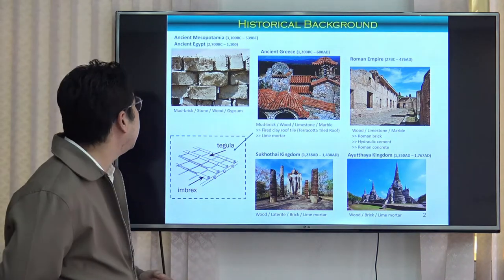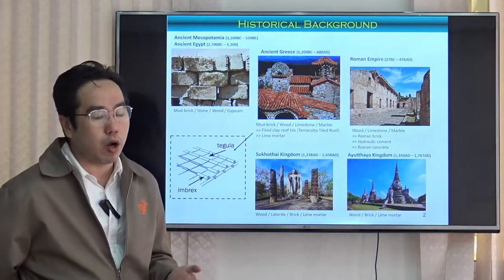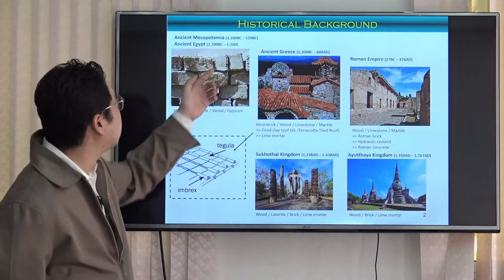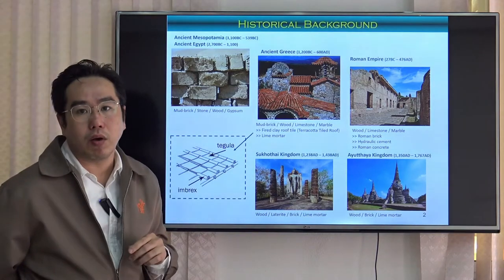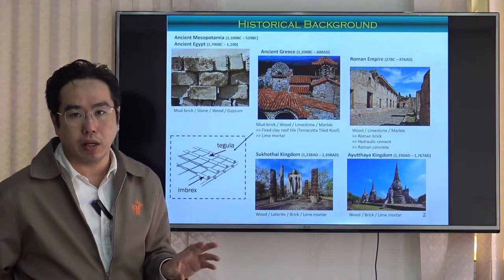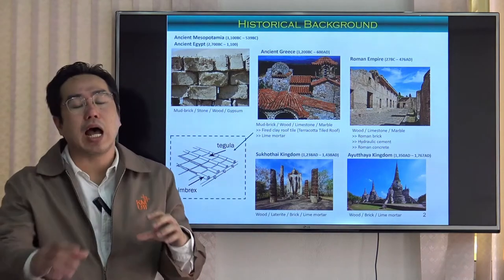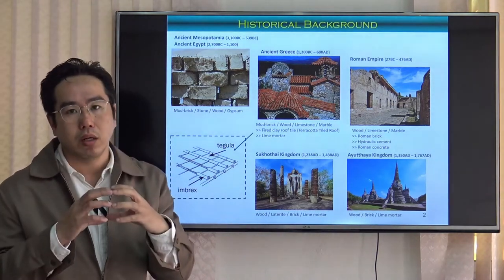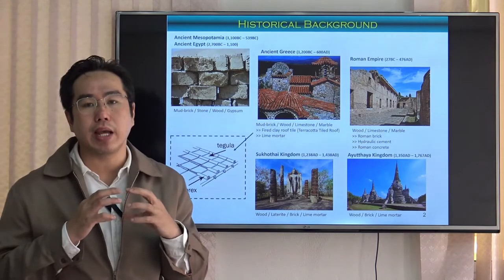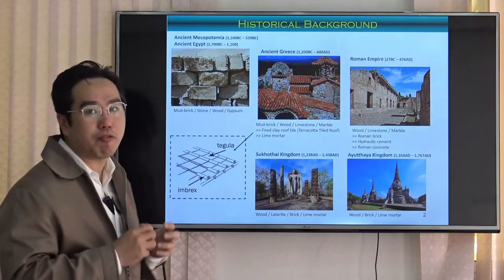In the Egyptian era, when we look at the construction of the Egyptian people — that is about 5,000 years ago — we can observe that human beings already learned to make a type of material that comes as a block. That can be considered the first time human beings learned to make a type of brick. At that time, the brick was made from mud or clay.